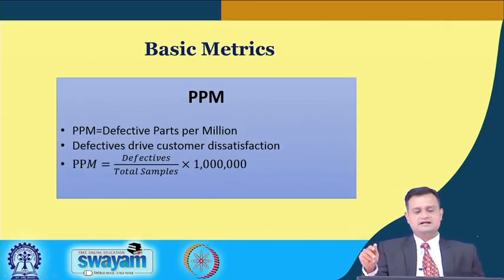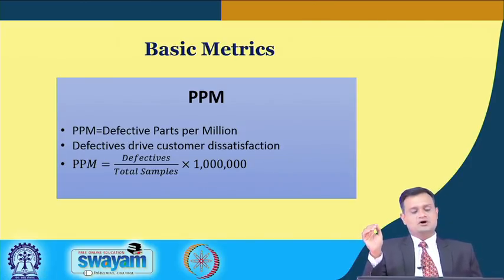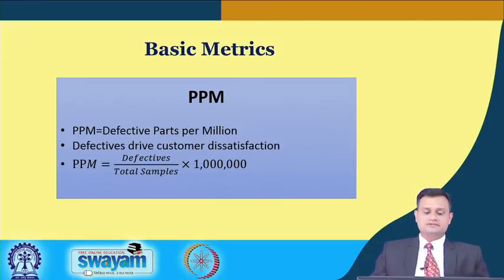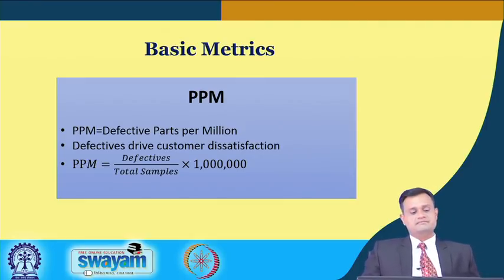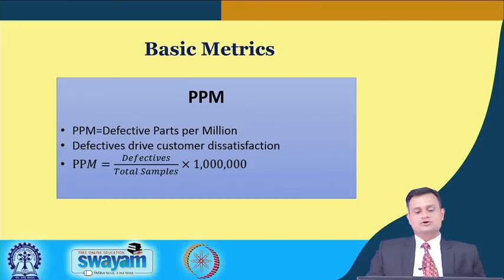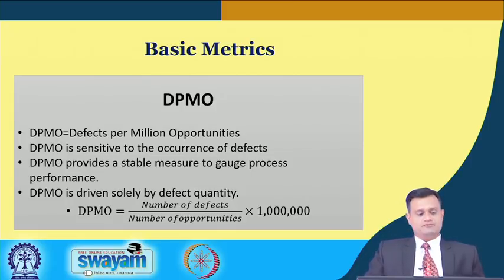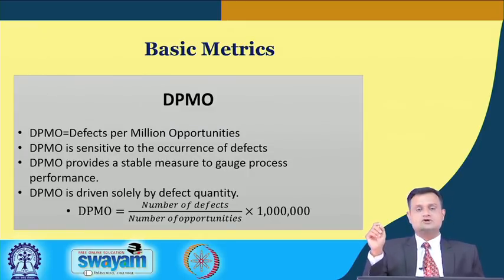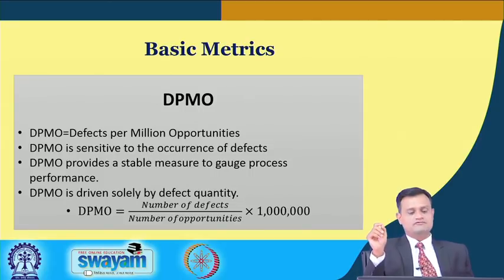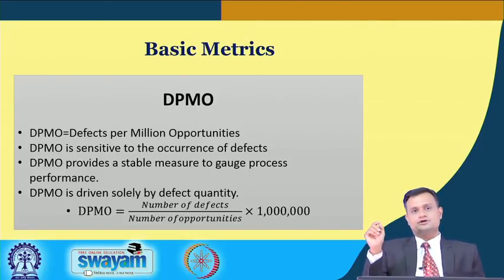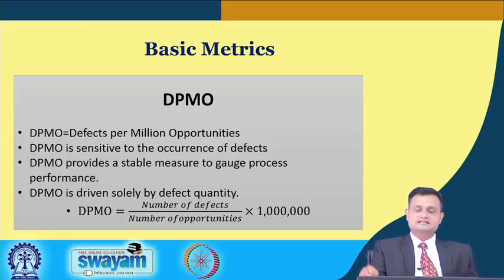The Six Sigma metrics and measurement: PPM is defects parts per million, measured as (defectives ÷ total sample) × 1,000,000. DPMO is defects per million opportunities — it is sensitive to the occurrence of defects and provides a stable measure to gauge process performance. DPMO is calculated as (number of defects ÷ number of opportunities) × 1,000,000. This measure can help us identify the sigma level of a process.